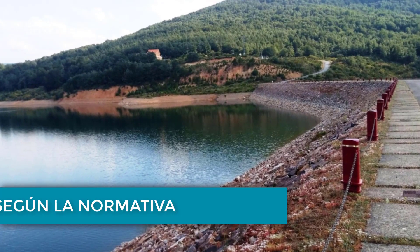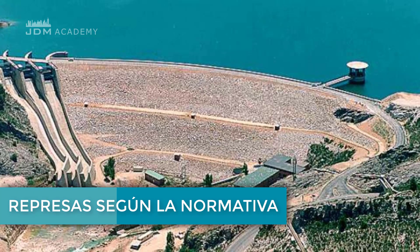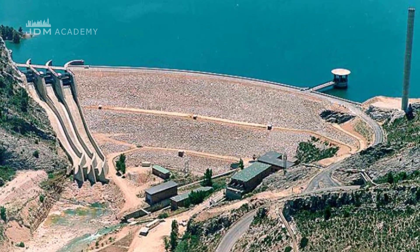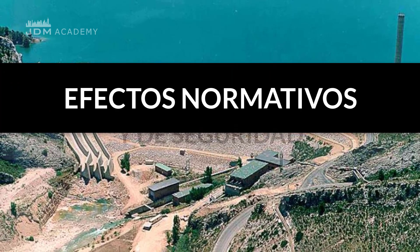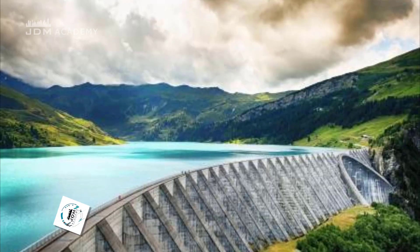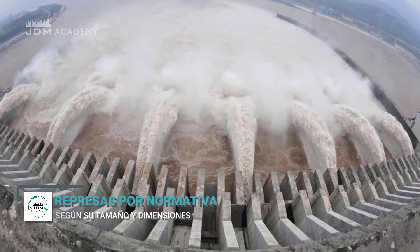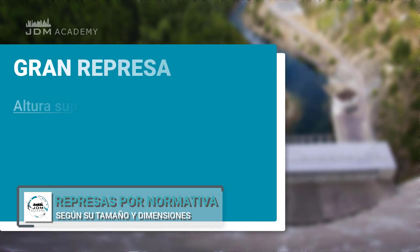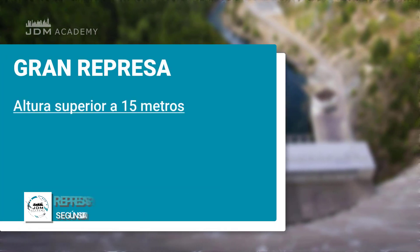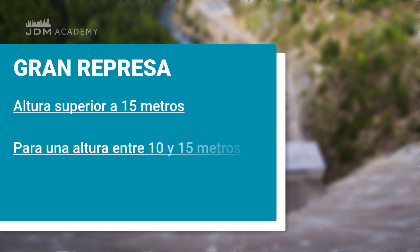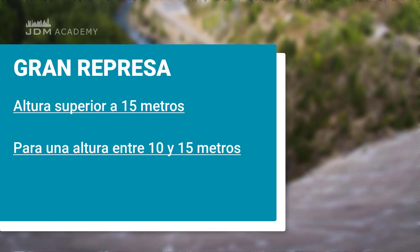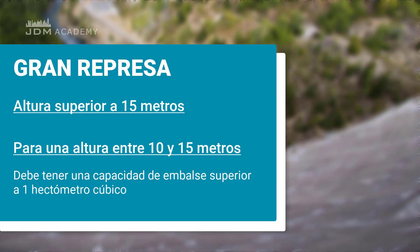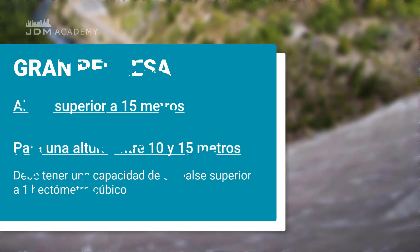Types of dams according to regulations. In addition to the previous classifications, regulations establish others to treat each dam differently for normative and safety purposes, according to their size or dimensions. Grandes represas (Large dams) — a large dam is one whose height exceeds 15 meters, or one with a height between 10 and 15 meters that has a reservoir capacity greater than one hectare-meter cubic, equivalent to one million cubic meters.